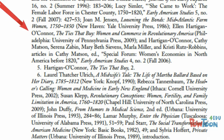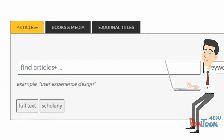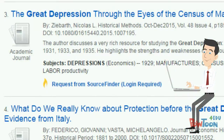First, the librarian told Will to look carefully at the references or footnotes for the article he had already located, where he would probably find citations for additional sources related to his topic. After identifying a few additional sources that looked relevant, Will could then locate these articles and books through the library's catalog and databases. If there were any that the library did not have, he could request them using the library's interlibrary loan service, SourceFinder.